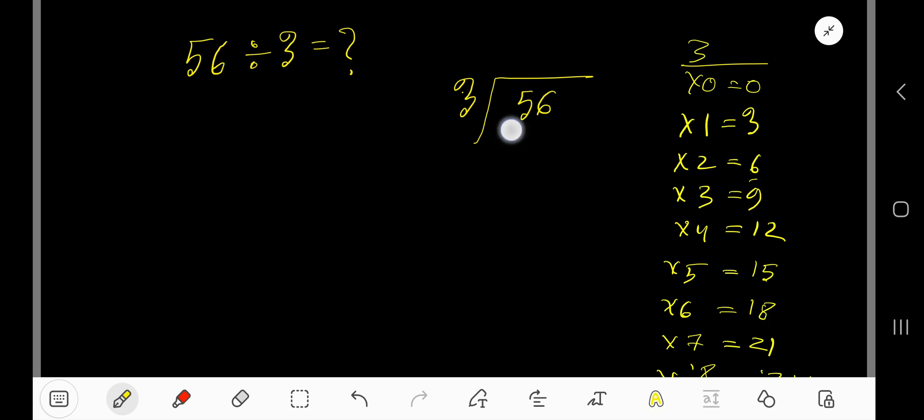3 goes into 5 how many times? 1 time. 1 times 3 is 3. Subtract to get 2. Now bring down the next digit, 6.